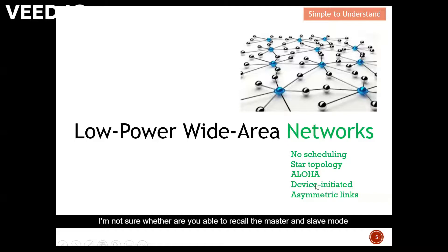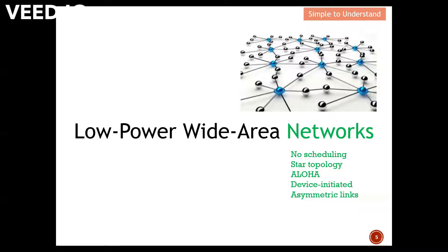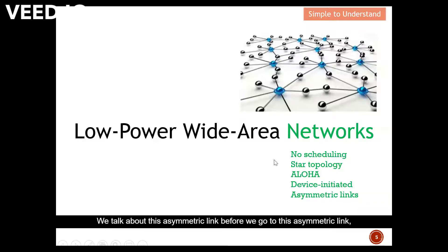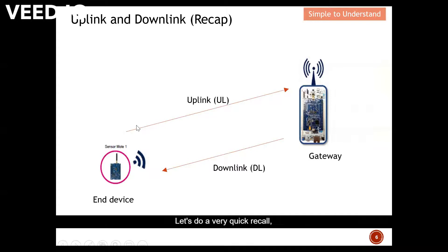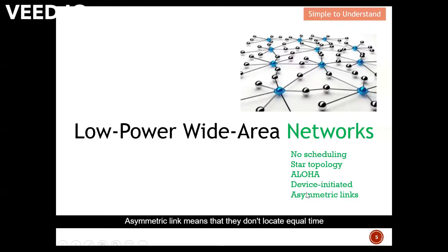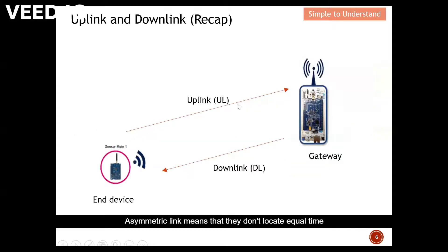We talk about device-initiated access. Recalling the master and slave mode from your school days: the master controls most of the tasks. In this case, the master belongs to the end device and the gateway is the slave. We also talk about asymmetric link. Let's do a quick recall of uplink and downlink: when the end device sends a message it is uplink, and when the gateway sends a message to the end device we call this downlink.